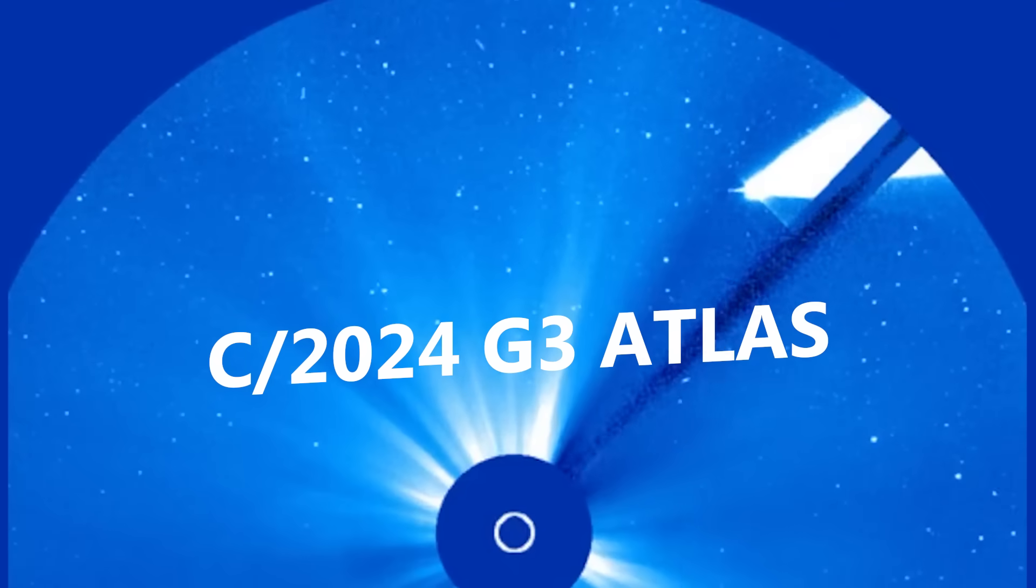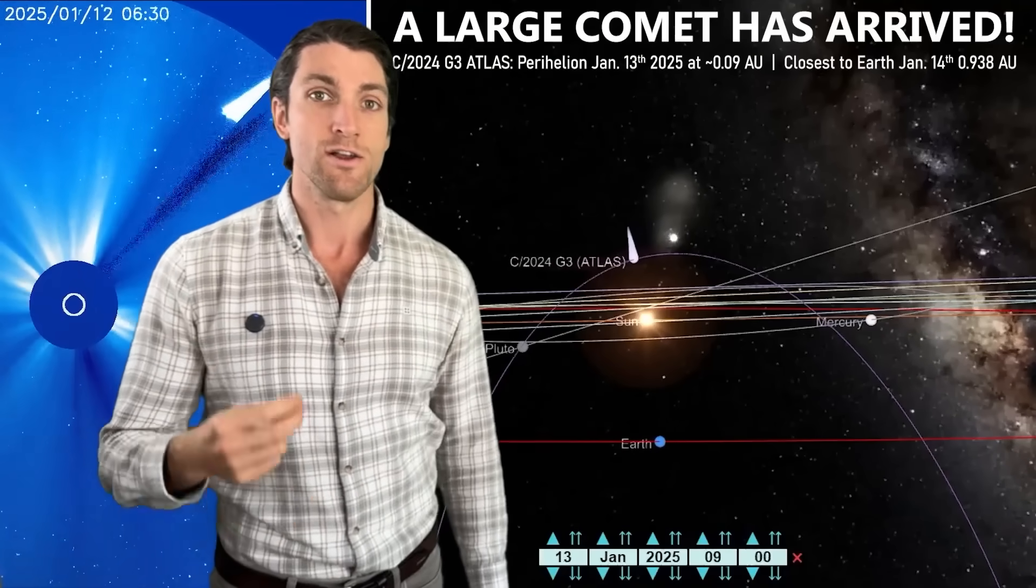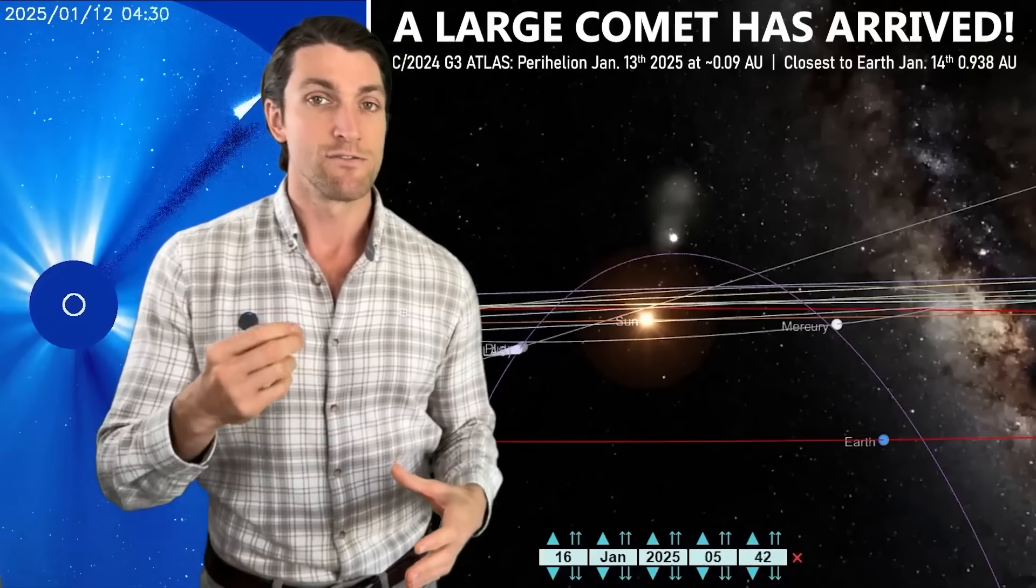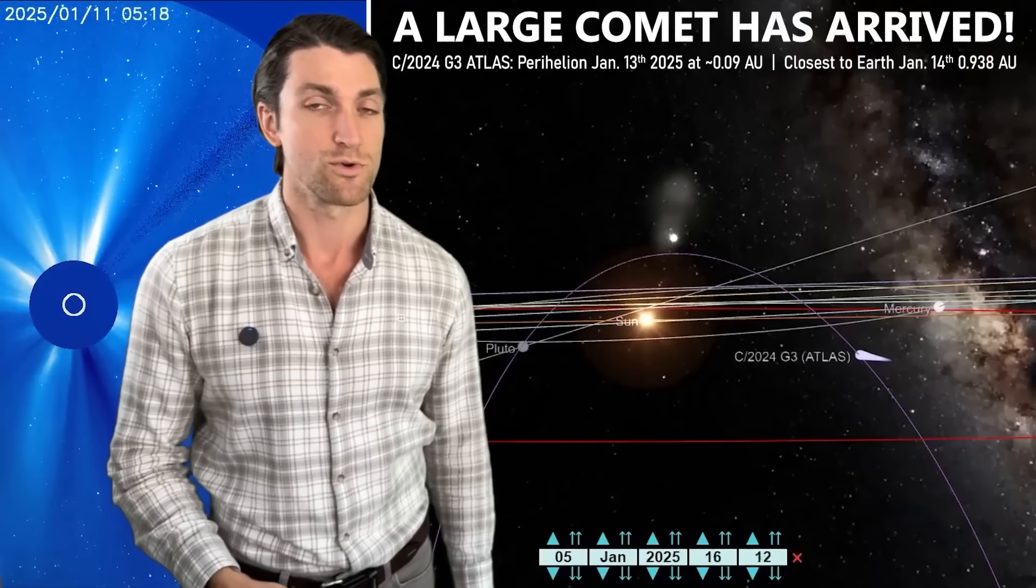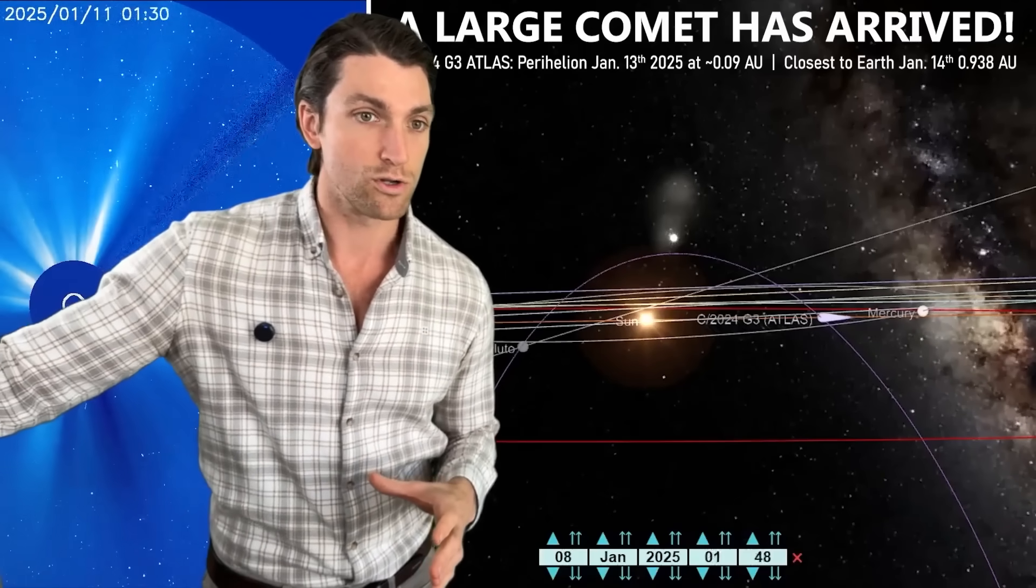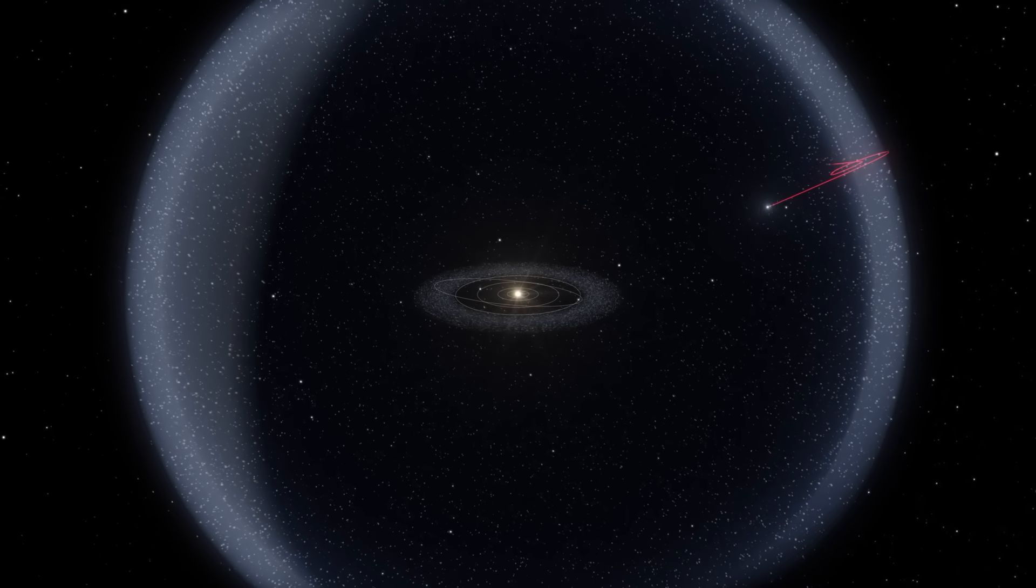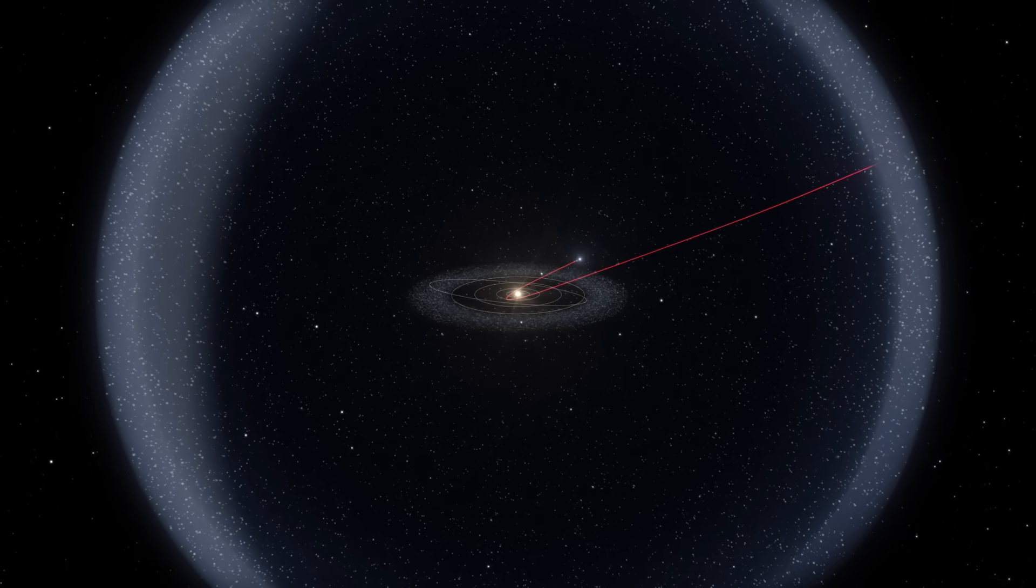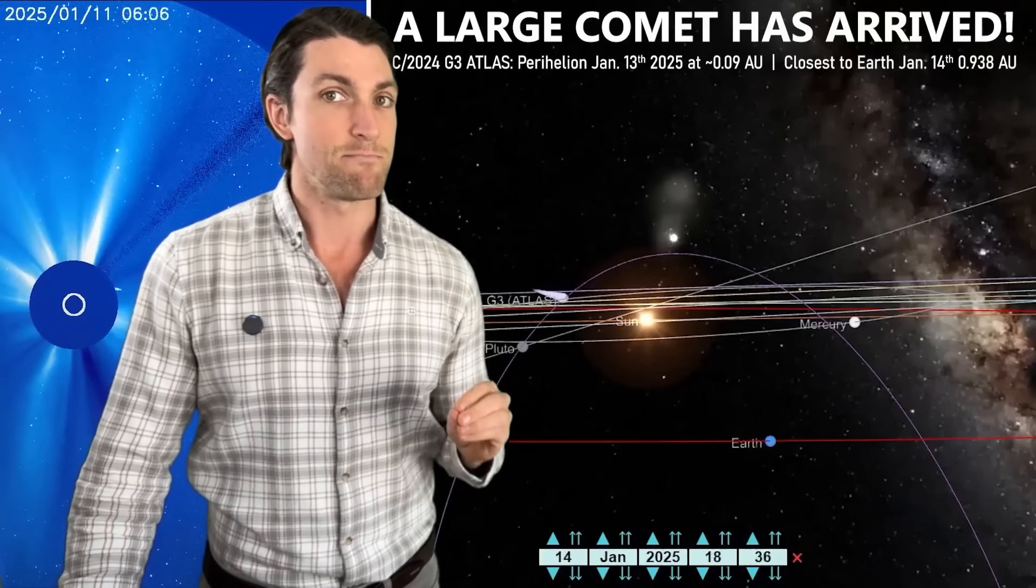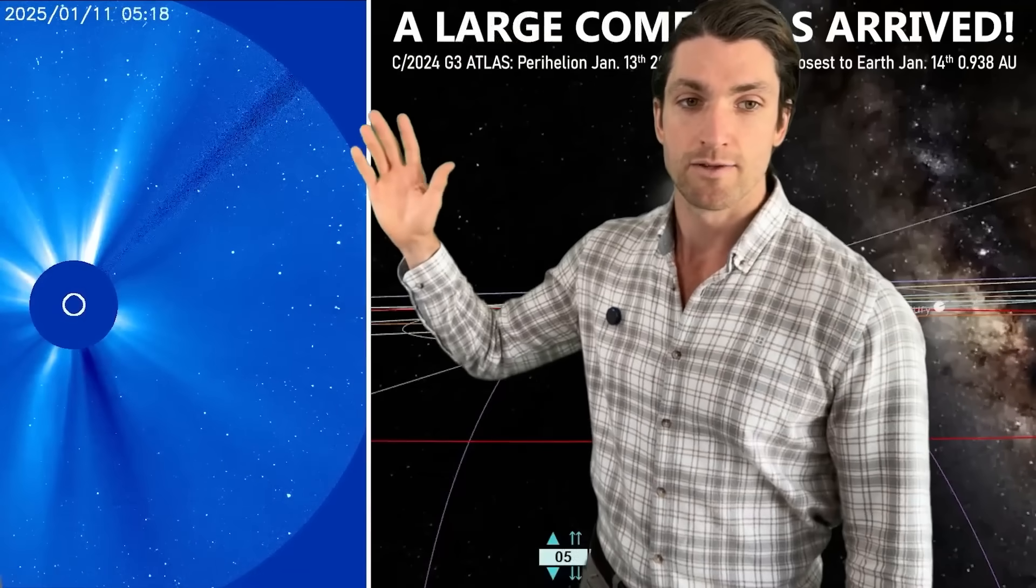This is comet C/2024 G3 ATLAS, the Atlas comet, and it is swinging in very close to the sun right as we speak, reaching its perihelion tomorrow on January 13th at a distance from the sun of just 0.09 astronomical units. So getting quite close to the sun after having been in the Oort cloud, this comet has an orbital eccentricity of about 1.0, meaning it's flown in from the deepest parts of outer space, the outermost edge of the solar system. This is a once in a lifetime trip for this comet. It may not survive its trip around the sun because it gets so close, though I think it will, being quite a large comet.